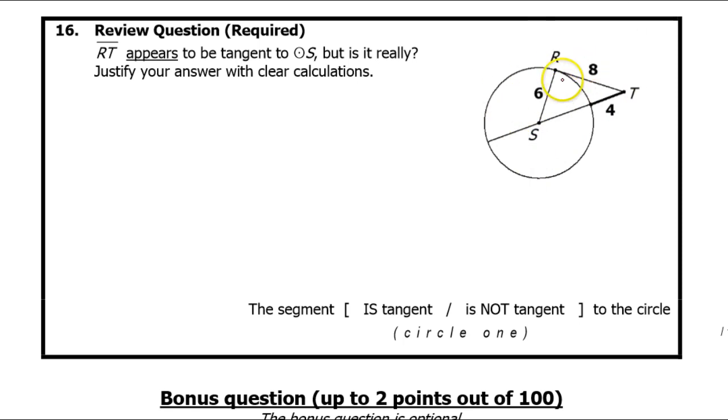So the idea is this. If RT is tangent, then RT should be perpendicular to RS. There's a theorem that says that a radius is always going to be perpendicular to a tangent. Notice there's no 90 degree angle shown here. So our job is to figure out, is this a 90 degree angle? Because if it is, that means RT must be tangent.